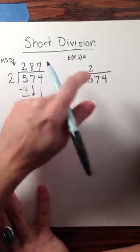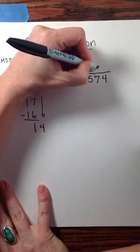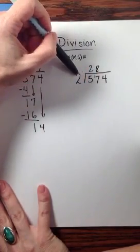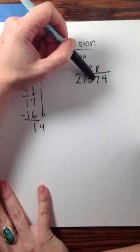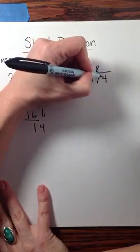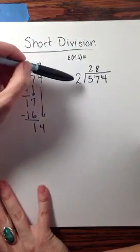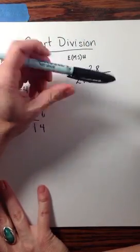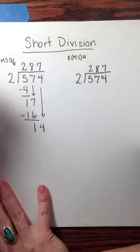Then 2 would fit into 17 eight times. 2 times 8 is still 16. 17 subtracted from 17 gives a remainder of 1, and then finally 2 into 14 fits 7 times.